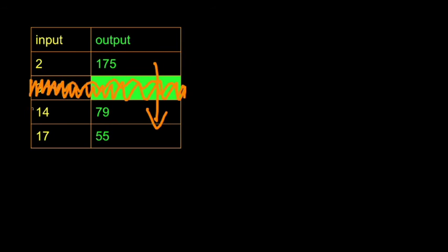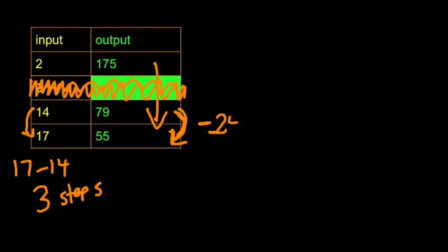I could say, how far is it from fourteen to seventeen? How many steps am I taking to get from fourteen to seventeen? Taking three steps. When I'm taking those three steps, what is my output changing by? Now notice this time it's going down, not up. So I'm going to call this negative. We're going down twenty-four. So if I'm going down twenty-four in three steps, how far down am I going with each one step? That'll be down eight. I'm counting down by eight.